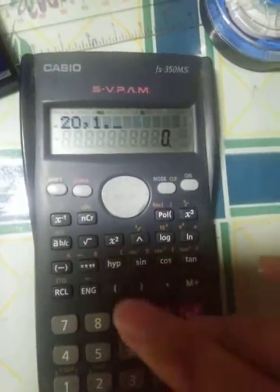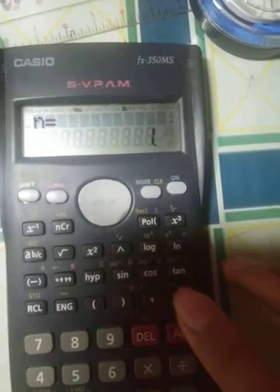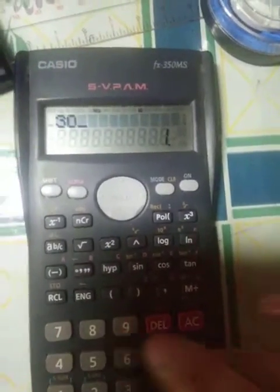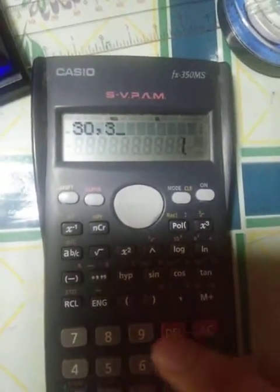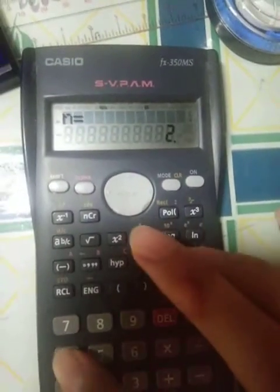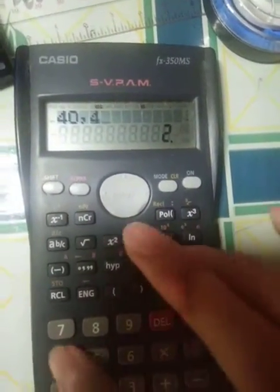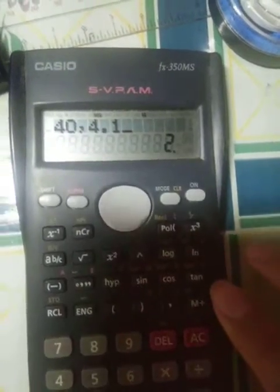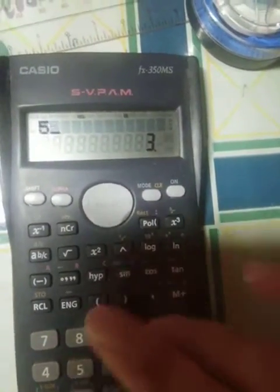Then we have 30, 3.4, M plus. Then 40, 4.1, M plus. Then 50, 3.8, M plus.